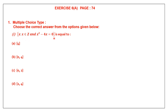This is in the set builder form. Let's read it. X is such that X belongs to — what does this Z stand for? It stands for integers. It belongs to integers and X squared minus 4X is equal to 0. Now, what is X here, children? X is an element in this set, and what kind of elements are these? These are all integers, and when we solve this equation, we will know what the elements are.